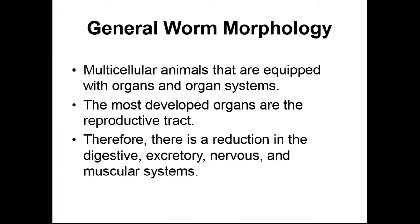Looking at the general structures or morphology of our helminths — they are multicellular organisms, and they're going to have organs and organ systems within them. These are simplified organs and organ systems, but still organs and organ systems nonetheless. Most of these worms are going to develop organs that focus on reproduction. These worms live in our GI tract, so they don't necessarily need to go through digestion themselves — they can just absorb nutrients that we've been digesting around them. Since the primary goal of these worms is reproduction, there's going to be less emphasis on digestion, excretory, nervous, and muscular systems, because they live in an environment ideal for absorbing nutrients and maintaining temperature — all they need to focus on is reproducing.